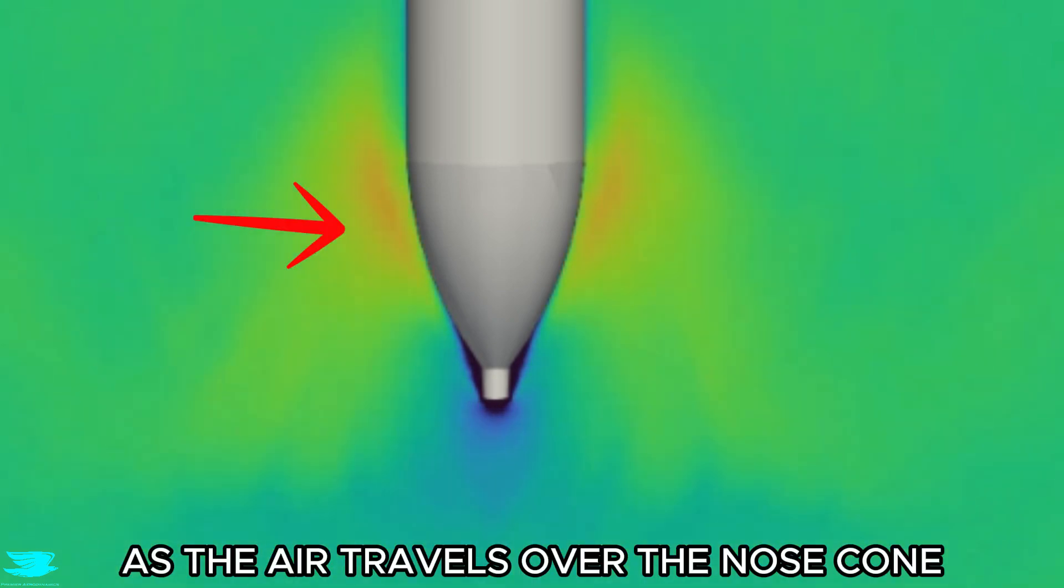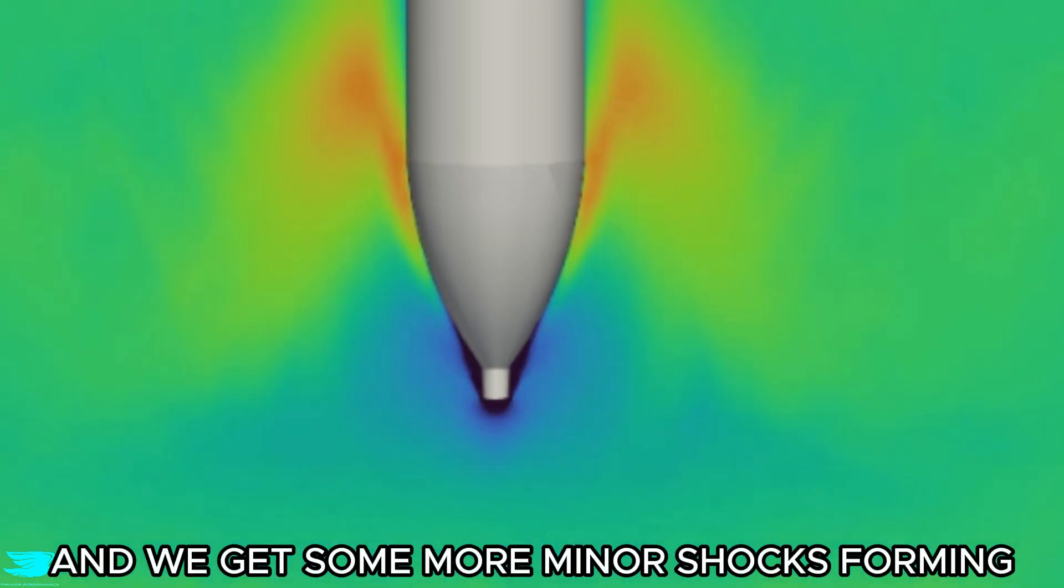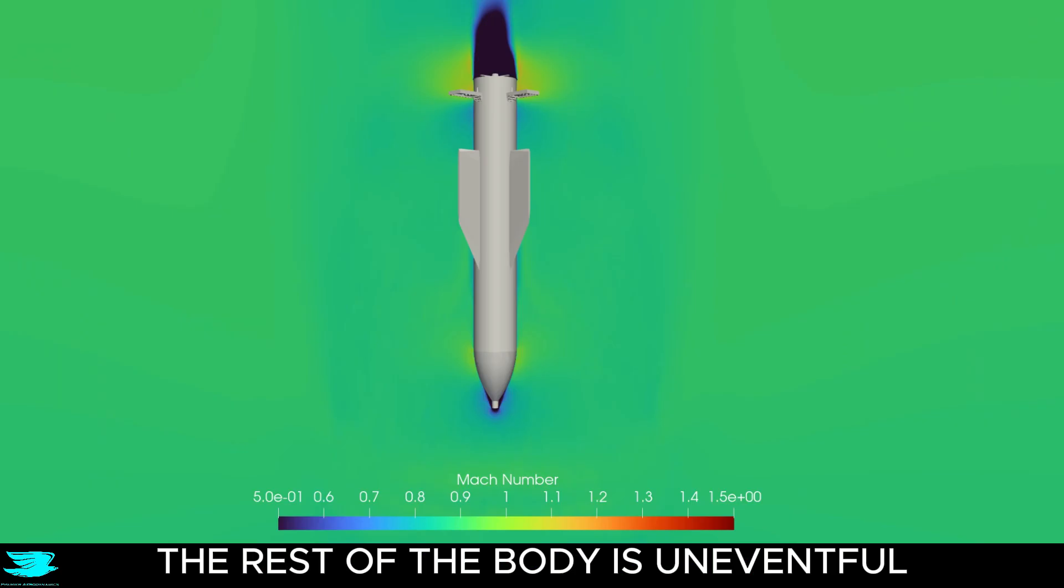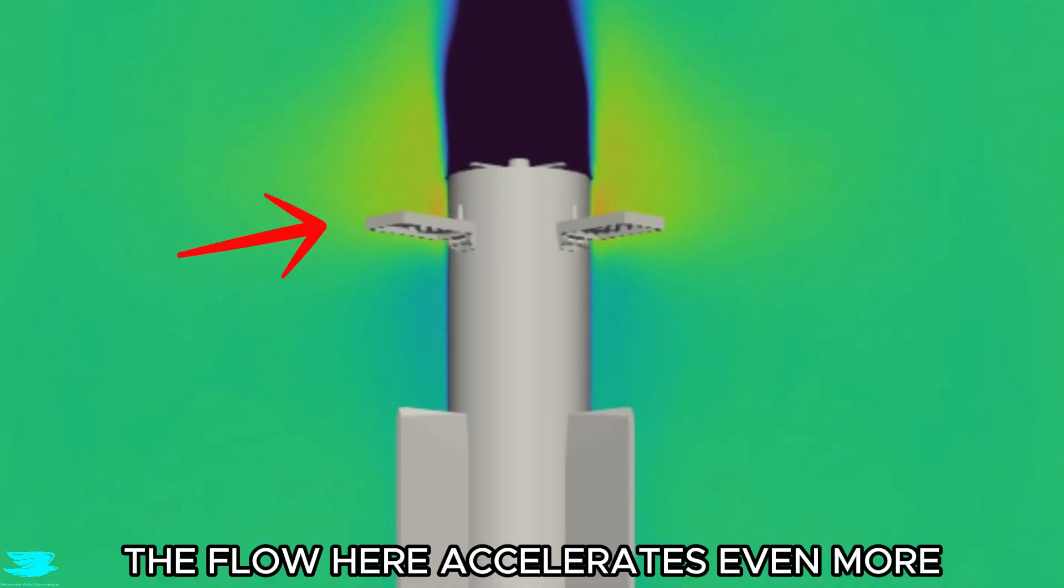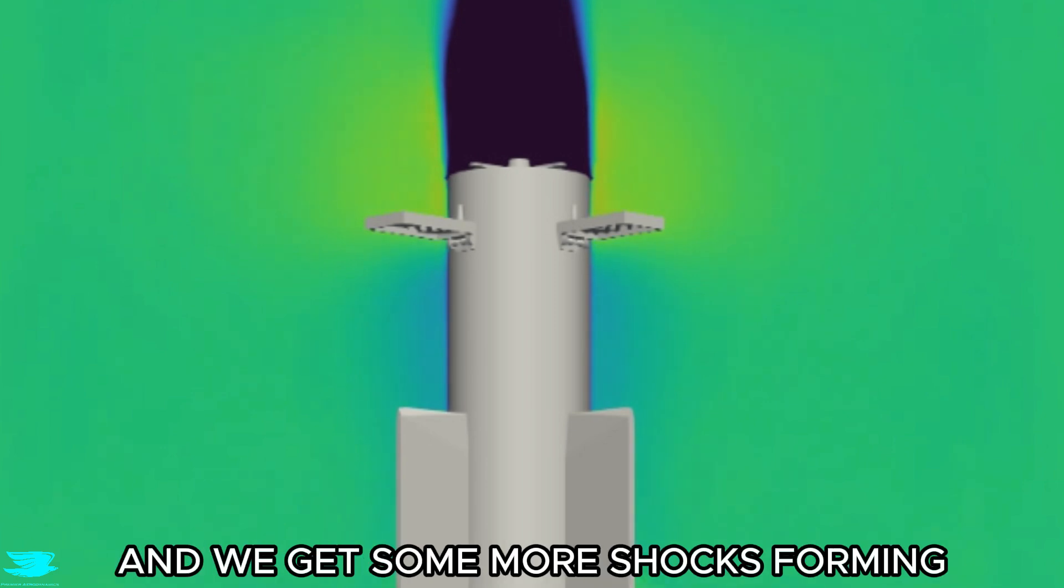As the air travels over the nose cone, it accelerates and we get some more minor shocks forming. The rest of the body is uneventful until we go between the plates. The flow here accelerates even more and we get some more shocks forming.